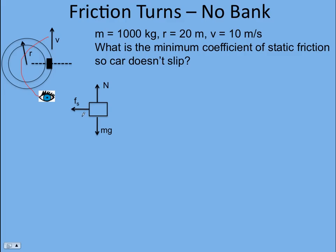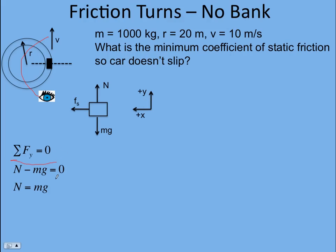We need a coordinate system, so we put positive x in the direction of the acceleration, which is toward the center of the circle. Positive y we make vertical — there's no acceleration in that direction. Writing Newton's second law for the y direction: the sum of the forces equals zero since there's no acceleration. The normal force is in the positive direction and the weight is in the negative direction, giving minus mg, so the normal force equals the weight.